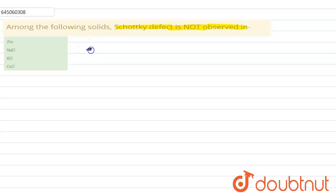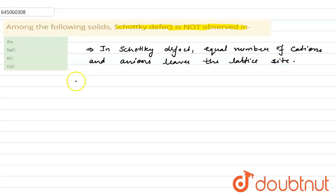is Schottky defect. In Schottky defect, equal number of cations and anions leaves the lattice site. And Schottky defect